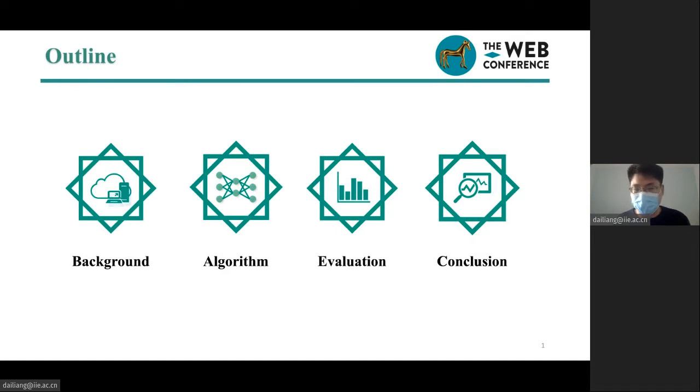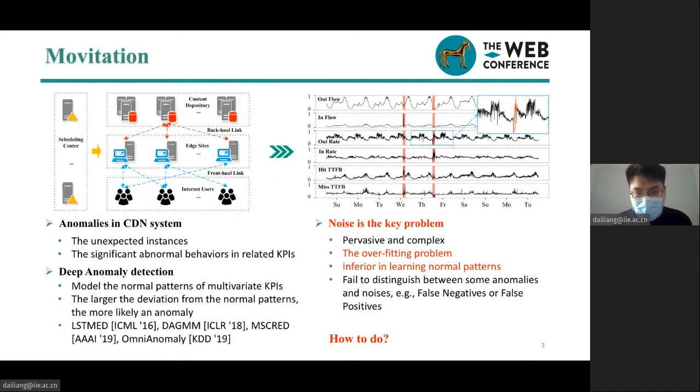Our research comes from the actual demand of detecting unexpected incidences from a top ISP-operated CDN in China, like server or network failure. These unexpected incidences usually result in significant abnormal behaviors in key performance indicators collected by CDN operators, such as traffic volume, packet ratio, and server response delay. The task can be described as how to detect abnormal behaviors in multivariate time series.